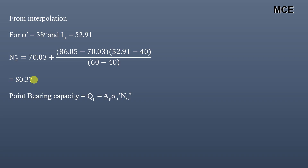Now we can calculate the point bearing capacity of the pile. Q_op = A_p × σ' × N_σ. Substituting values: Q_op = 0.36 × 113.2 × 80.37 = 3275.24 kN.